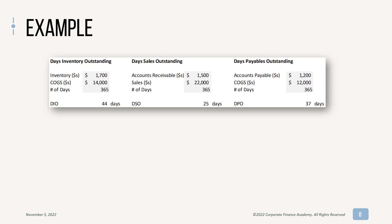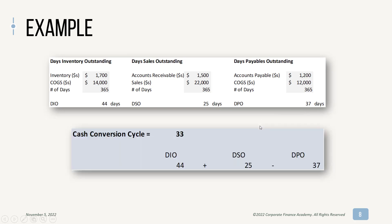Here's a quick example. For days inventory outstanding: average inventory is $1,700, COGS is $14,000, times 365 days — that gives you a 44-day DIO. For DSO: accounts receivable balance is $1,500, sales are $22,000, times 365 — that gives you 25 days DSO. For payables: $1,200 of accounts payable, $12,000 of COGS, times 365 days — that's 37 days DPO. So your cash conversion cycle is 44 plus 25 minus 37, which equals 33 days.